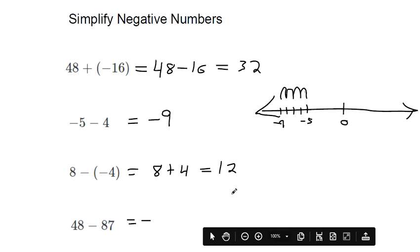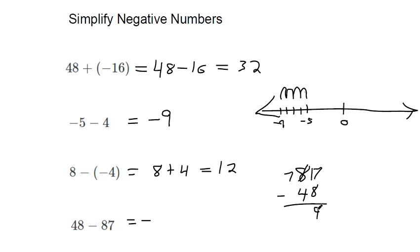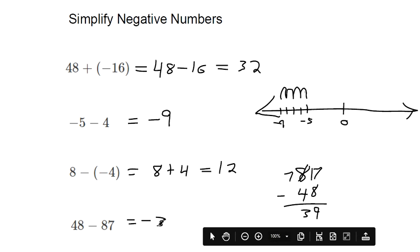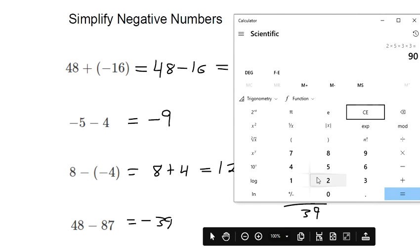So once I've decided that it's negative, let's see what the difference is between these two numbers. How far apart are they? And if you do the subtraction like we did previously, we get negative 39. And you can check yourself with the calculator too. 48 subtracted by 87, that makes negative 39.